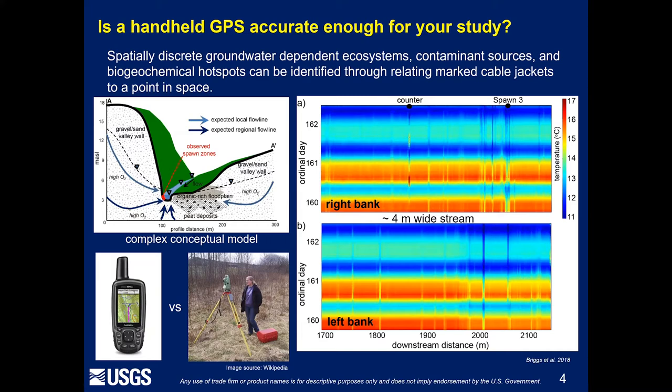The conceptual model here shows some very discrete groundwater discharge that trout are utilizing at the 10-centimeter scale. In that case, we might need to get pretty precise with our spatial referencing. The data on the right shows a fiber optic cable laid along a bank on a trout stream, and you can see there are differences between the right bank and the left bank, even though the stream is only four meters wide. Those vertical bands tend to indicate groundwater discharge points that the trout may use to spawn.